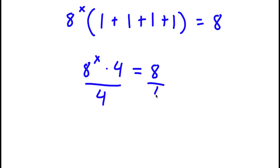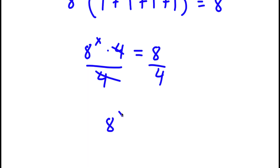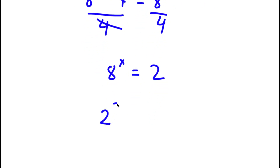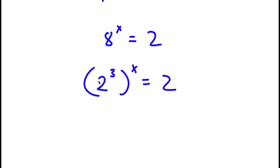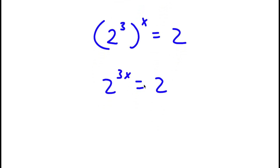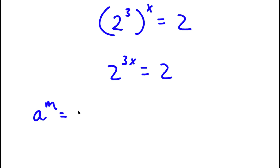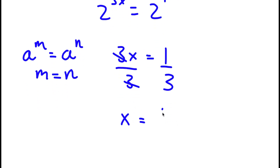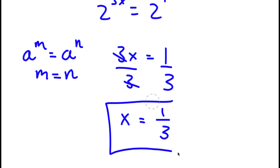Now if I divide both sides by 4, I'll be left with a to the power of x is equal to 8 divided by 4, which is 2. And 8 is the same thing as 2 to the power of 3. So now I have 2 to the power of 3 to the power of x is equal to 2. And 2 to the power of 3 to the power of x is the same thing as 2 to the power of 3x, equal to 2. Now if a to the power of m equals a to the power of n, then m equals n. So since 2 is the same as 2 to the power of 1, we get 3x equals 1. Dividing both sides by 3, x is equal to 1 over 3.